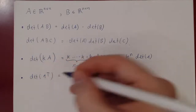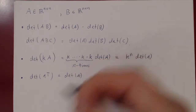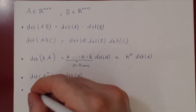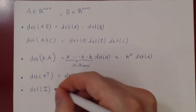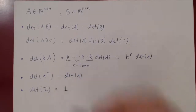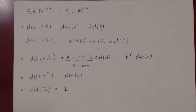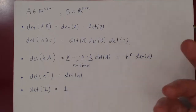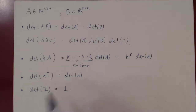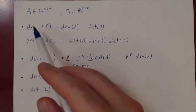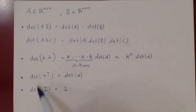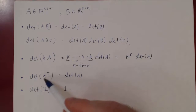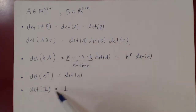As a quick reminder: transposing a matrix does not change the determinant. Also, the determinant of the identity matrix I of any size equals 1. Geometrically, multiplying a region by I does nothing — it doesn't change area or volume — so the scaling factor is just 1. In summary: det(AB) = det(A)det(B); det(KA) = K^n det(A); det(A transpose) = det(A); and det(I) = 1.